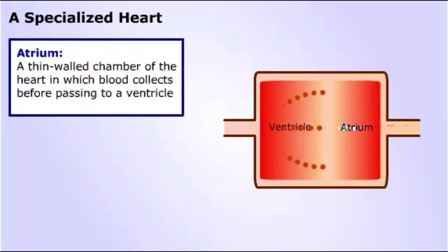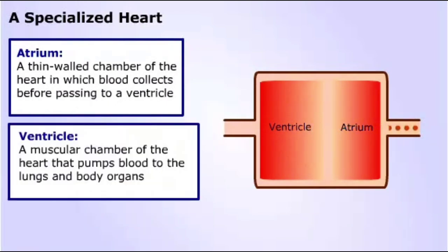A simple heart consists of two chambers. One, the atrium, receives incoming blood and acts as a reservoir. When the atrium is full, it pumps blood to a second chamber, the ventricle.